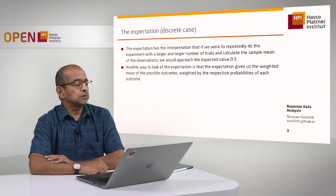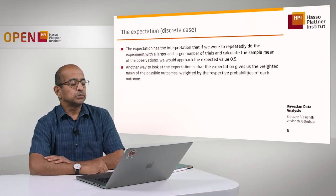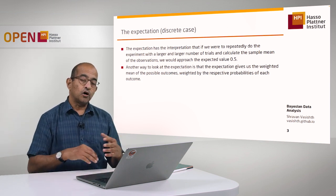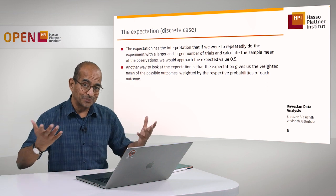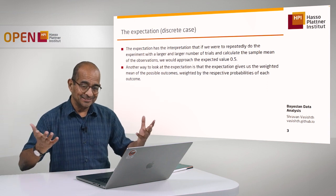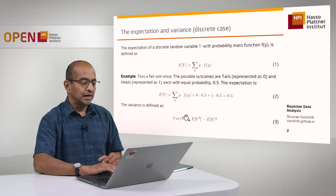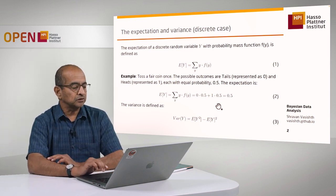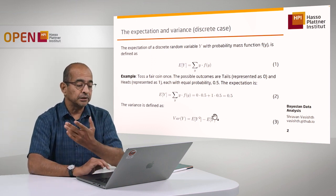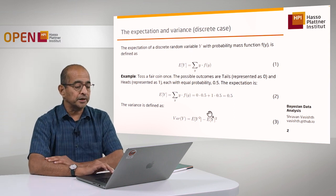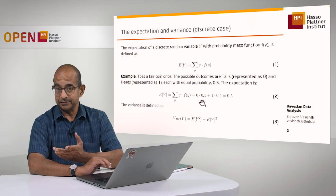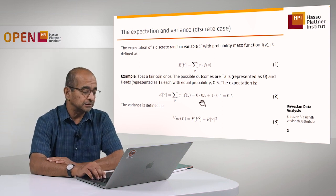Another way to think about the expectation is as the weighted mean of the possible outcomes, weighted by the probabilities. That's what I just did — I'm literally taking the weighted mean weighted by the probabilities of particular outcomes. If theta had been 0.1, the probability of success would be 0.1, so this would be multiplied by 0.1 and the 0 outcome multiplied by 0.9 — it's a weighted sum in that sense.